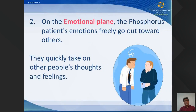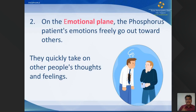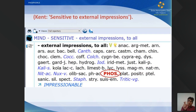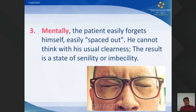On the emotional plane, the phosphorus patient's emotions freely go out towards others. They quickly take on other people's thoughts and feelings — expressions like 'Oh my God, what happened to you? Are you suffering? You may have a lot of problems, my sympathy is with you.' They cannot control themselves; the sympathy flows outward. For this, we have the rubric 'sensitive to external impressions' where phosphorus is the only three-mark remedy. Cross-references include 'impressionable,' which we will also discuss. Mentally, the patient easily forgets himself, spaces out, and cannot think with usual clarity.